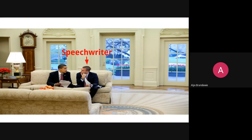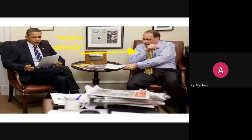Other significant pieces of the president's staff include the speech writing team. Typically there's a Director of Communications in the White House who serves as the chief speech writer, with several deputies working underneath them. They're responsible for crafting the president's message to the public, whether in speeches, campaign stops, or press releases. Senior advisors are always available to consult the president if some obscure policy issue comes up.